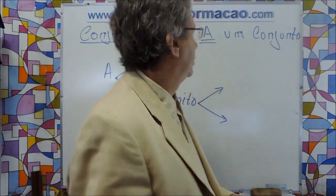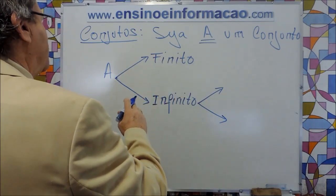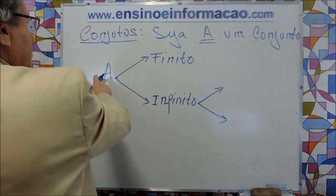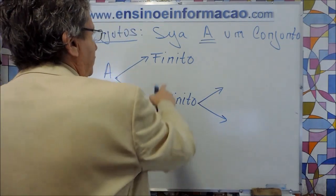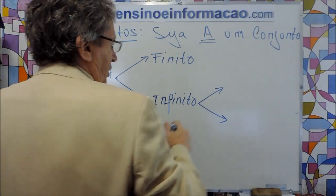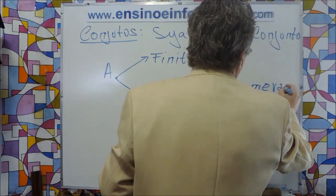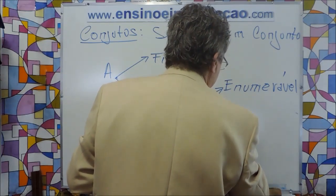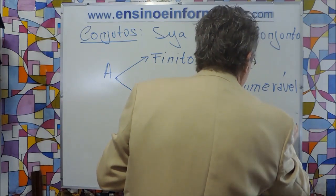Vamos fazer uma distinção primeiro com respeito a conjunto finito e infinito, bem breve, sem dar definição — depois nós vamos dar. Com conjuntos, seja A um conjunto qualquer. Esse conjunto A pode ser finito ou infinito. Depois nós vamos dar a definição. Se ele for finito, a gente vai dizer o que acontece em termos de cardinalidade. Se for infinito, ele pode ser classificado como enumerável ou não enumerável.